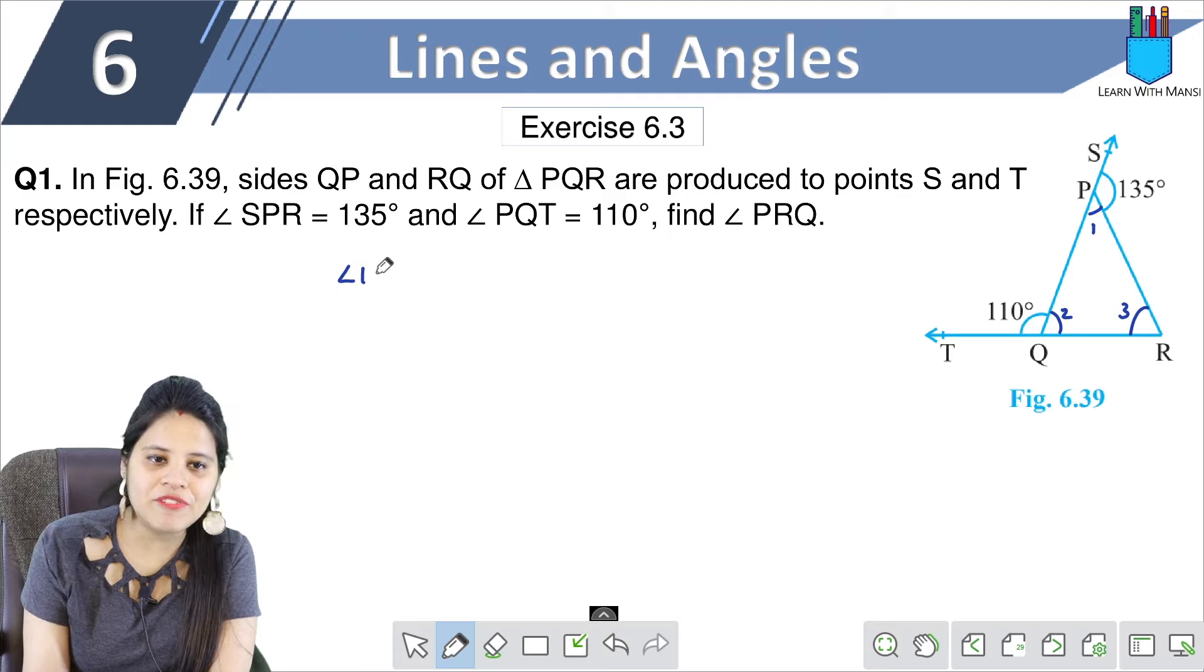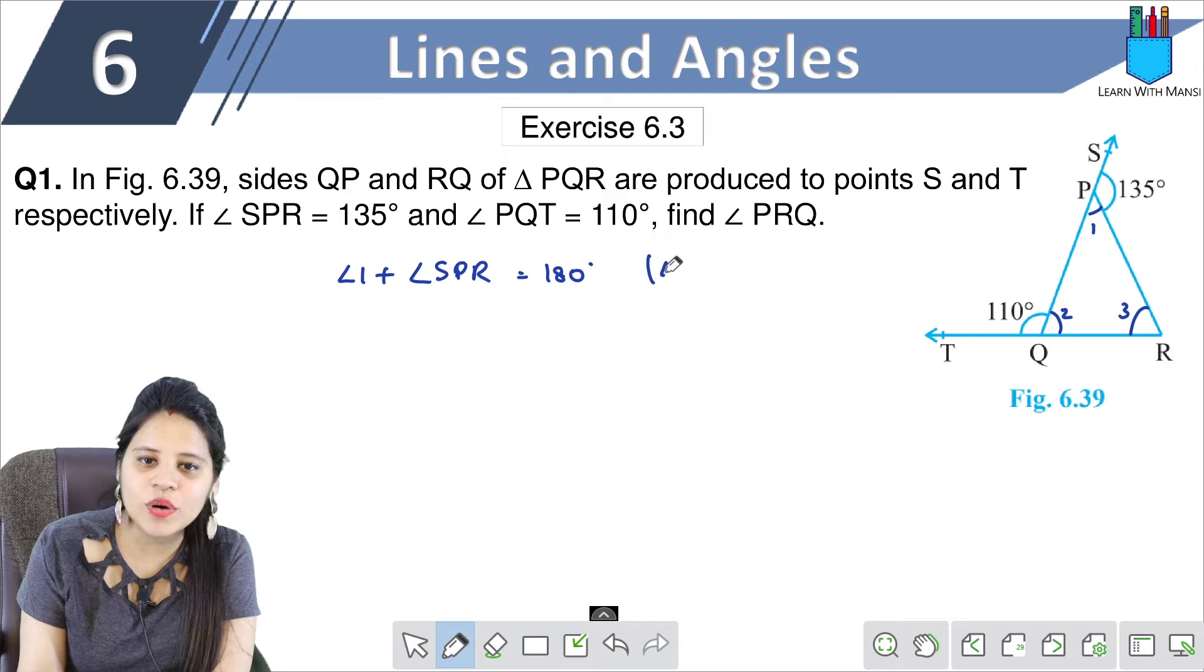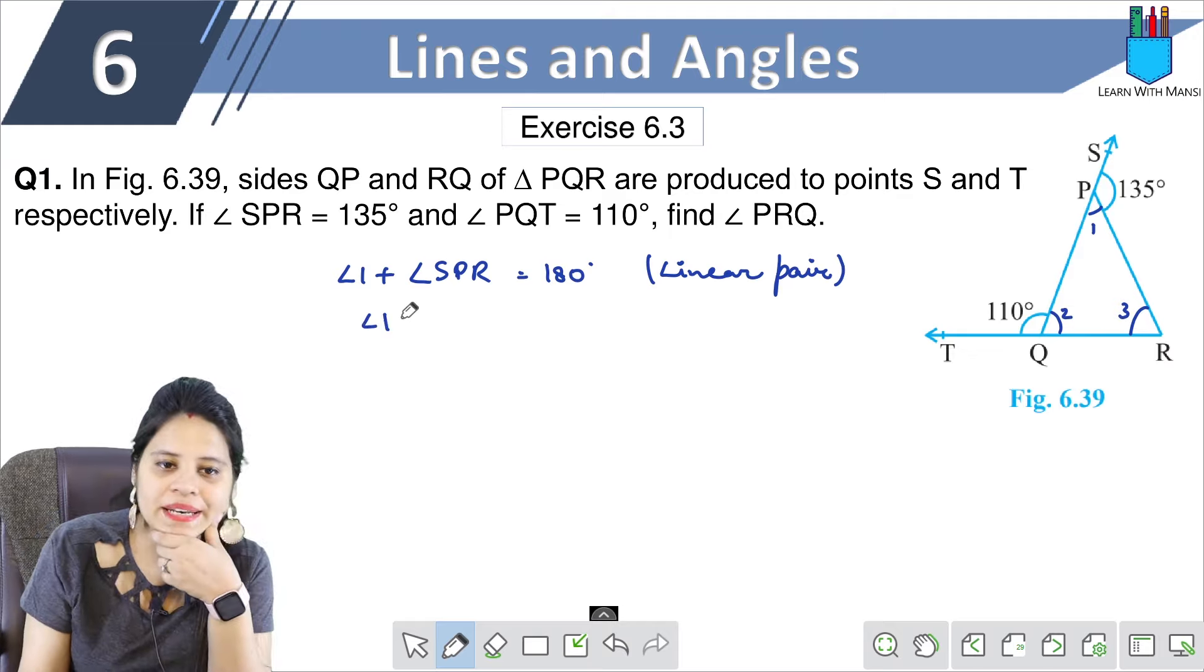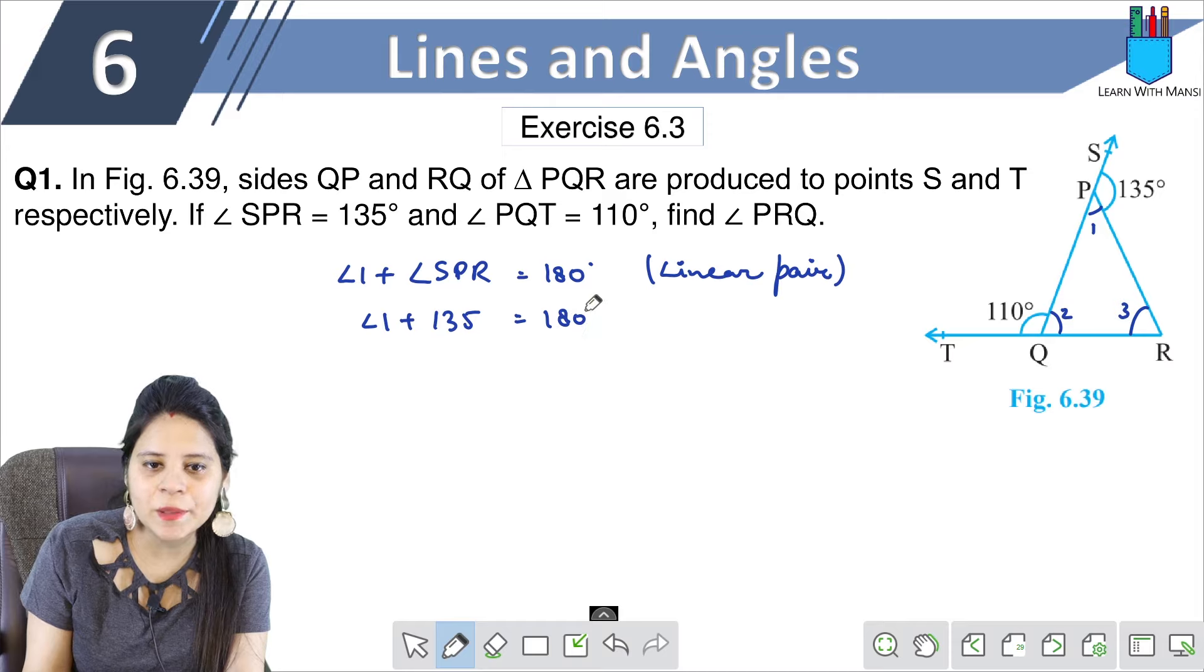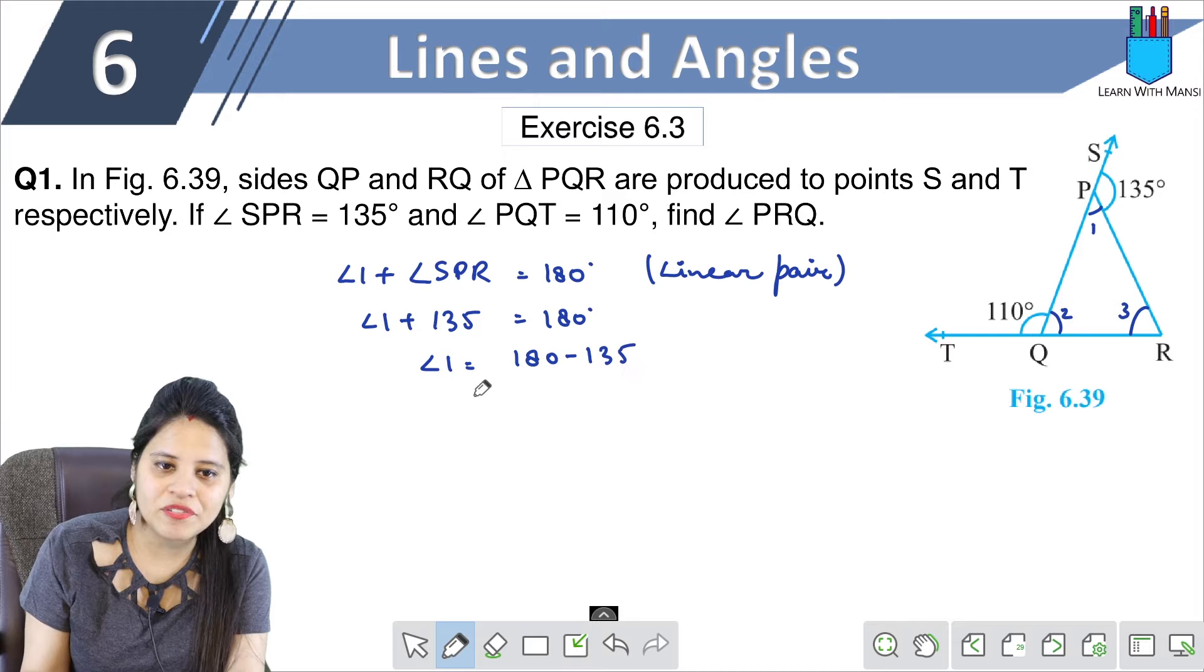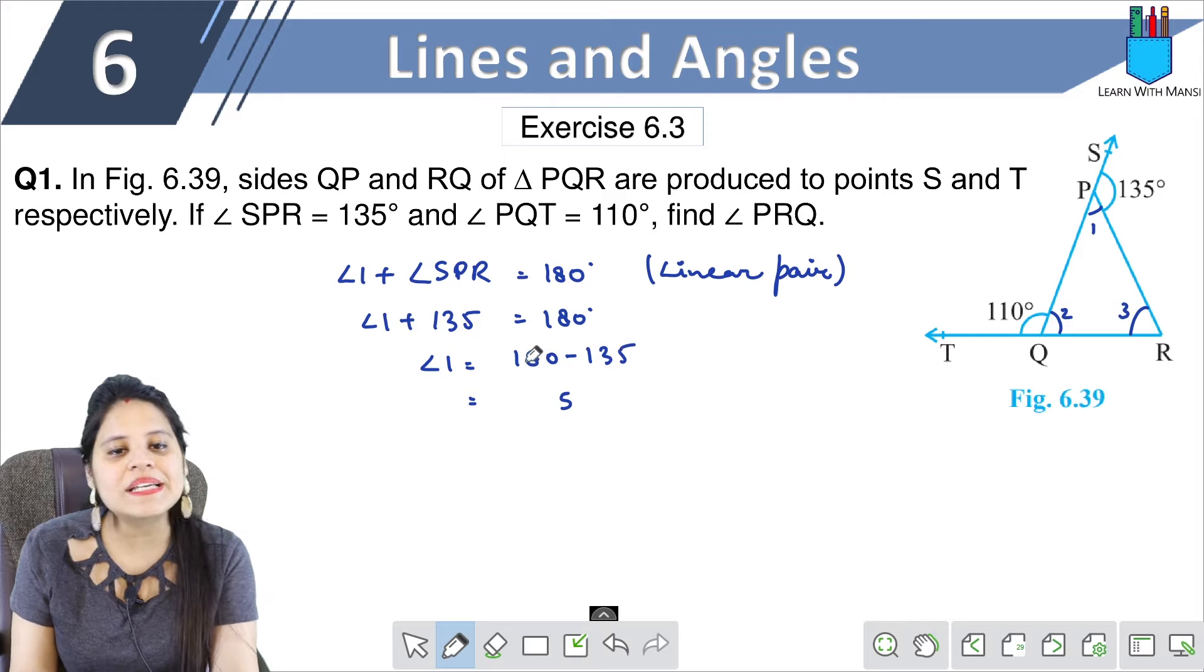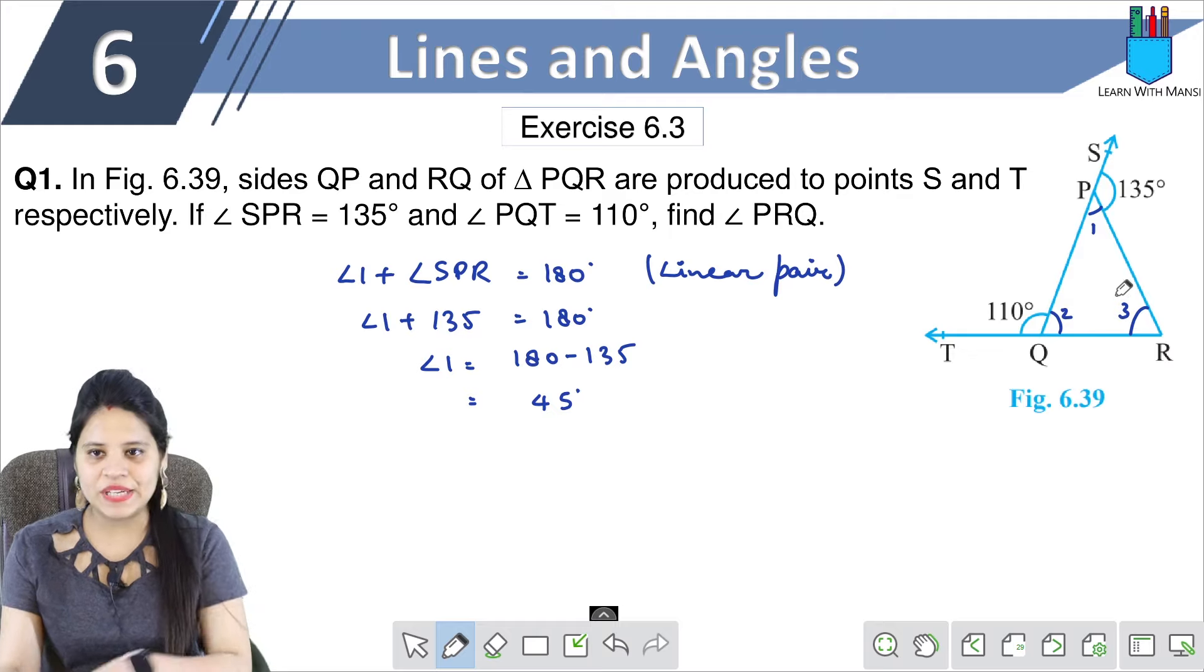So angle 1 plus angle SPR equals 180 degrees because of linear pair. Angle 1 plus 135 equals 180. So angle 1 equals 180 minus 135. This gives us 45 degrees. Angle 1 is 45 degrees.